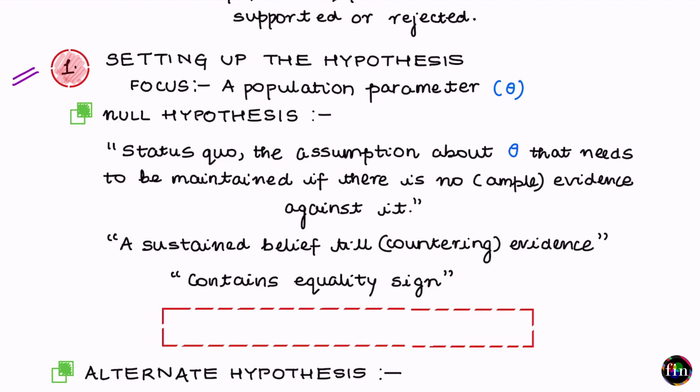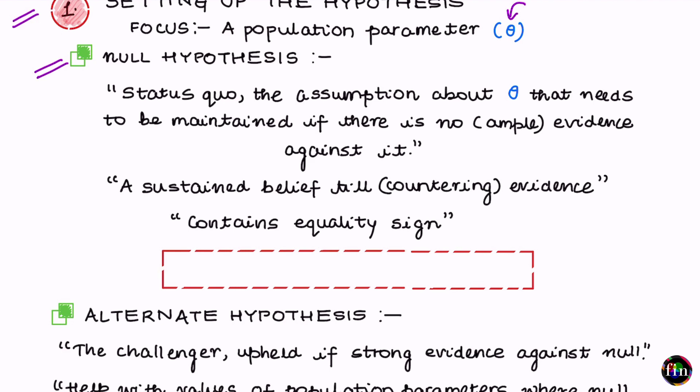In general, let us call the population parameter theta. When setting up the hypothesis, we actually set up two hypotheses. The first is the null hypothesis. The null hypothesis is the status quo — the assumption about the parameter theta that needs to be maintained if there is no ample evidence against it. In our example, the assumption that theta, the average life of a bulb, equals 10,000 is the null hypothesis.